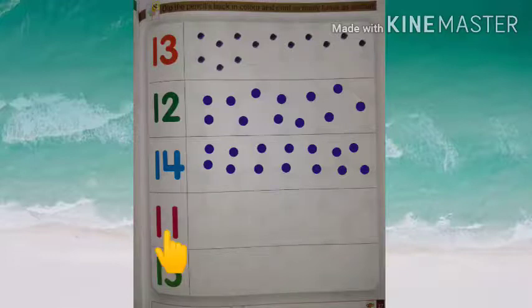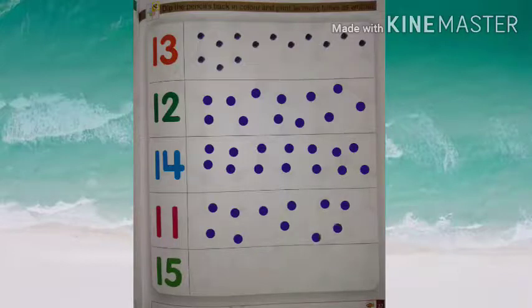Then, 1, 1, 11. To is box mein 11 print karenge. 1, 2, 3, 4, 5, 6, 7, 8, 9, 10, 11.